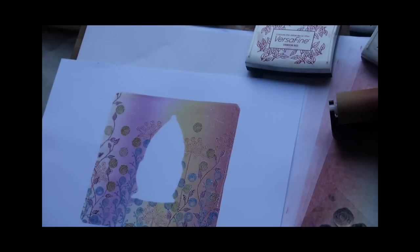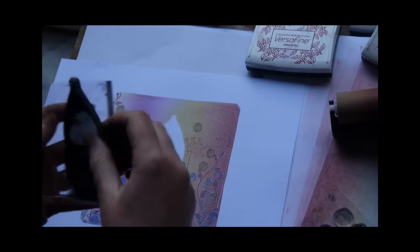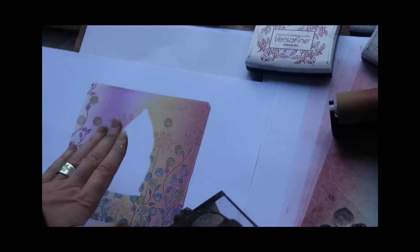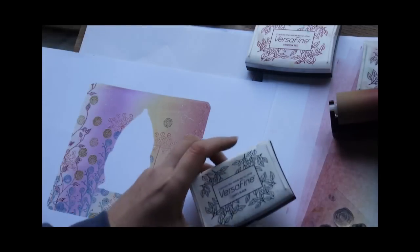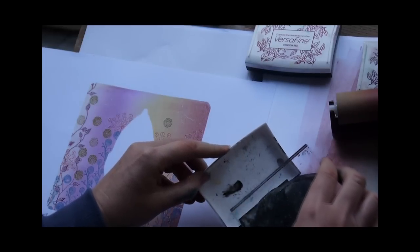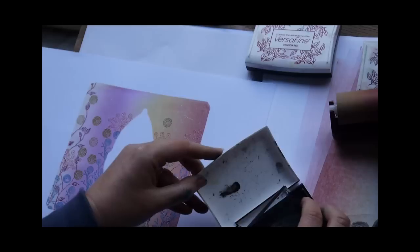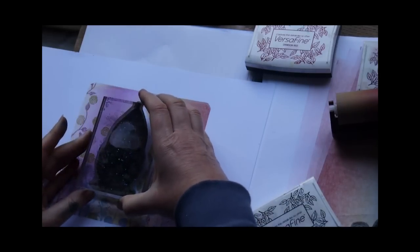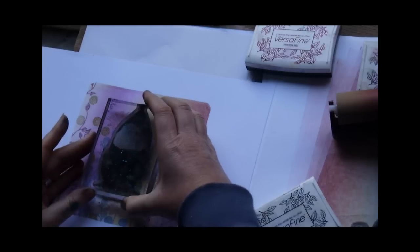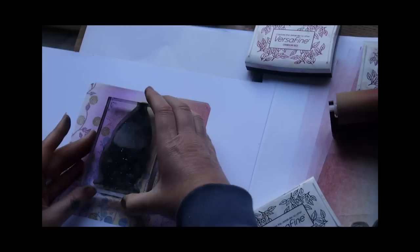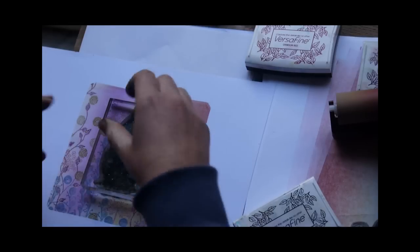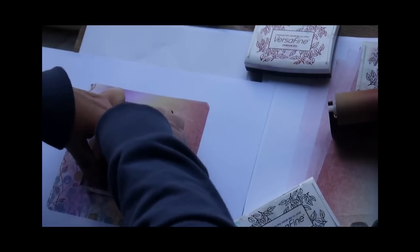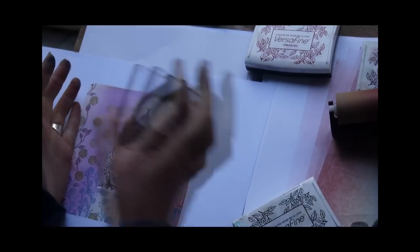We're now going to use our acorn house stamp and just stamp over our mask area. So inking up in our onyx black, lining up the best we can. As I said before, don't worry too much if you miss any areas. Give that a good press down.